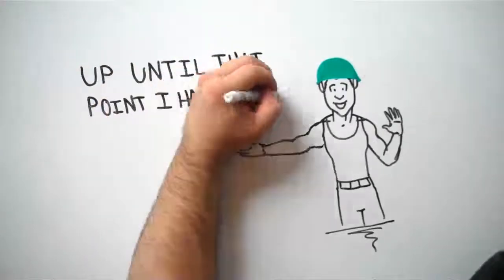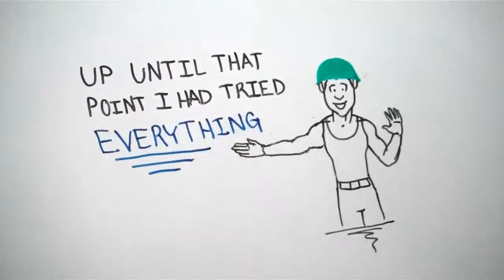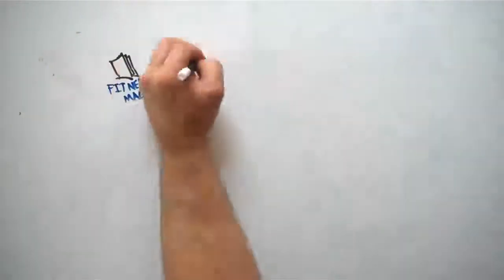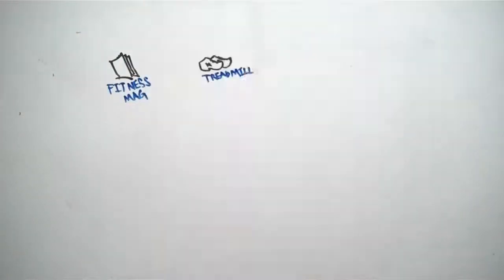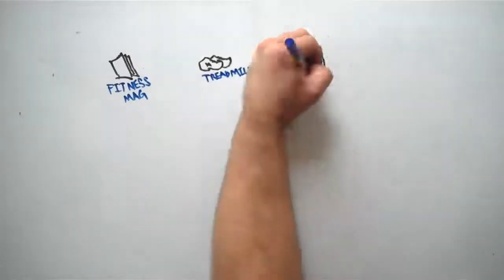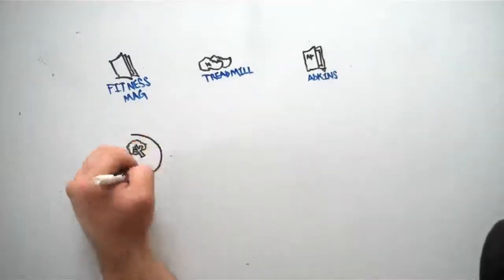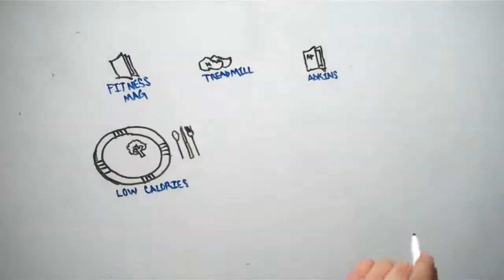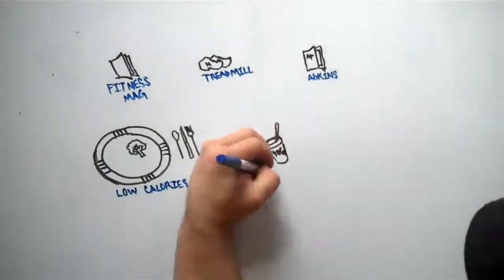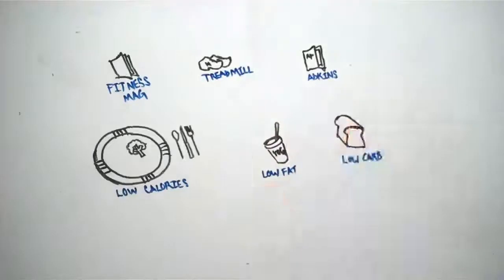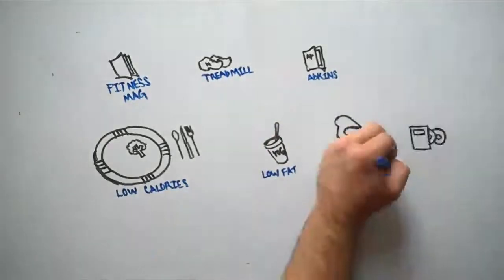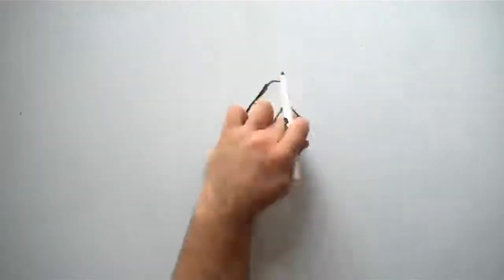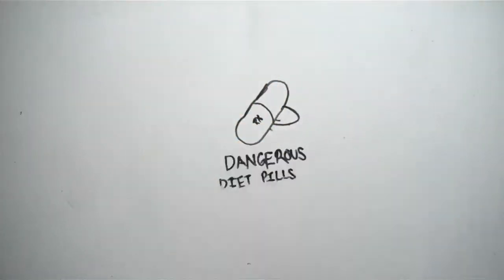Up until that point, I had tried everything to get in shape. You name it, I tried it. I bought a new fitness magazine every month and followed the advice in there. I tried running on the treadmill five days per week. I tried the Atkins diet. I tried eating an insanely small amount of calories. I tried a low-fat diet. I tried a no-carb diet. I bought a massively overpriced fitness DVD from an infomercial for $150. And at one point, I even went as far as considering taking dangerous diet pills.